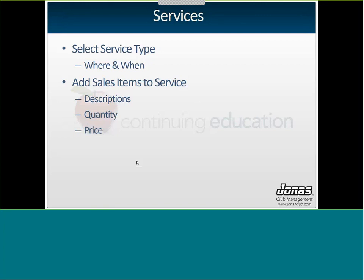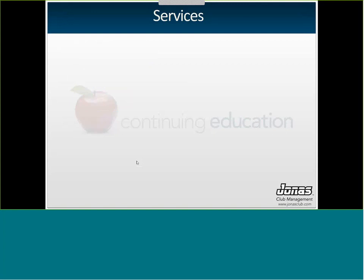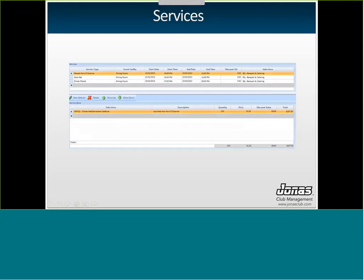Once you have your service type, move to the bottom section to add the individual sales items — description, quantity, and you can override the price per item. There are two ways to enter services: enter individual sales items one by one using the list, or click Item Selector to see all items and double-click the ones you want. It's about 50/50 who prefers each method.